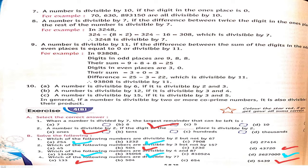Now point 9 — a number is divisible by 11 if the difference between the sum of the digits in the odd places and the sum of the digits in the even places is equal to 0 or divisible by 11.